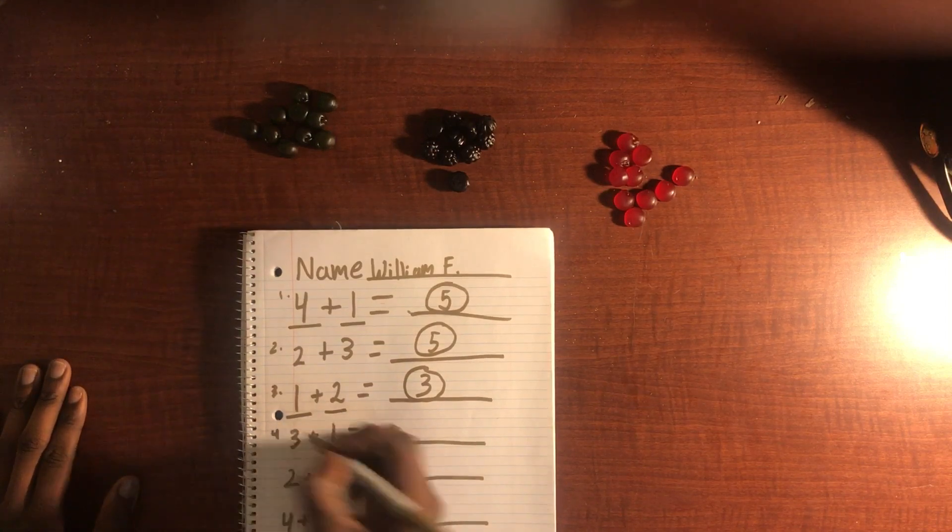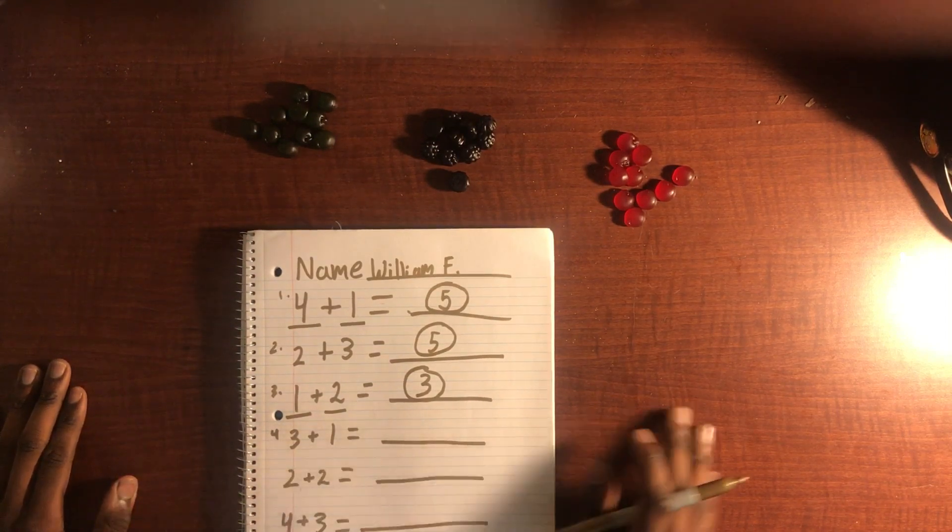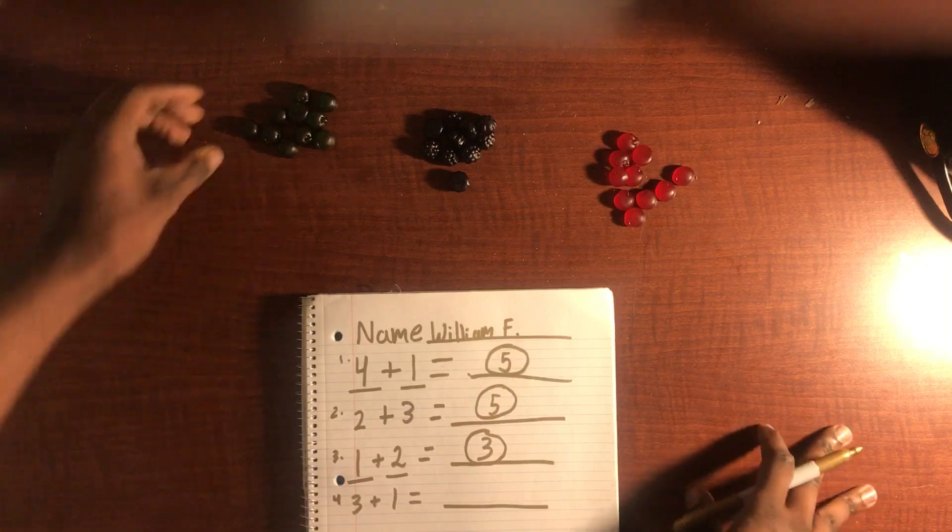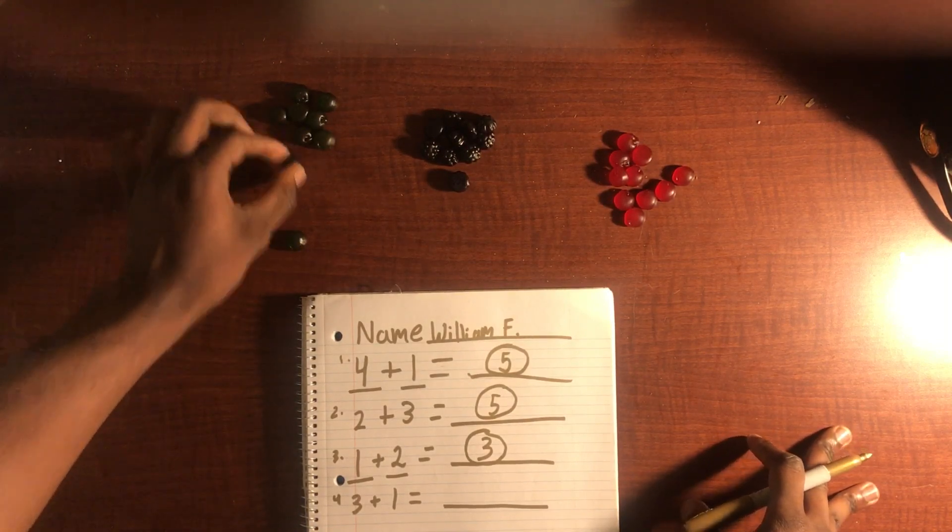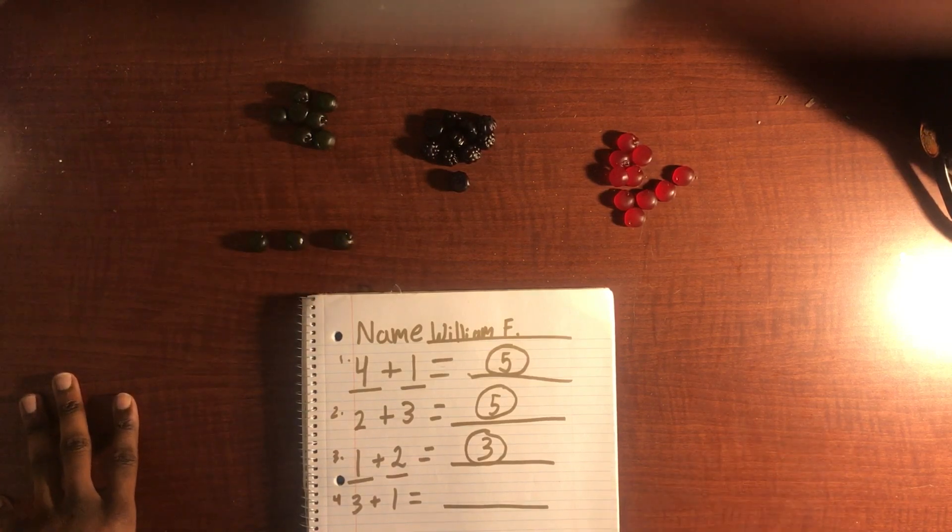Number four. So we have a total of three: one, number two, three green gummies.